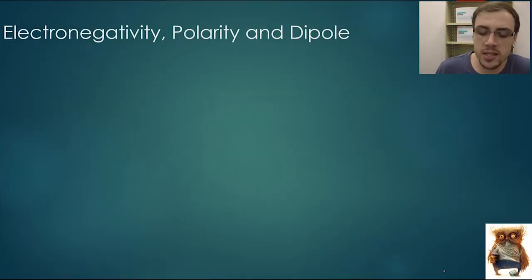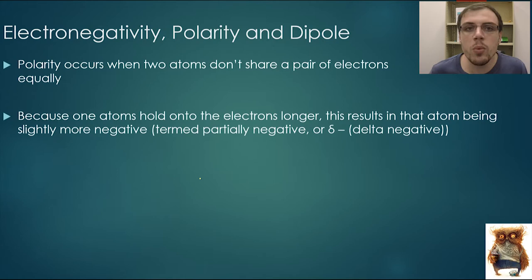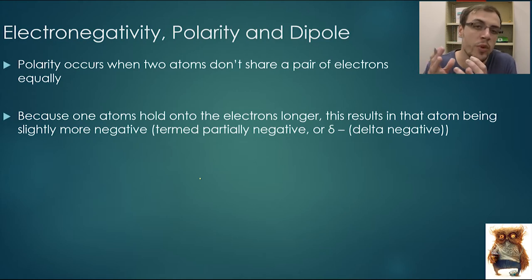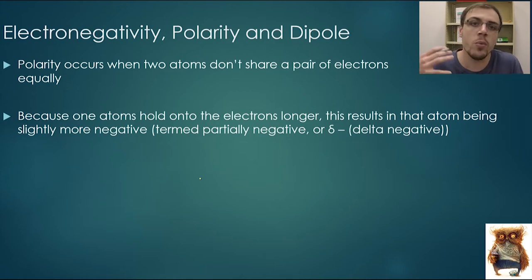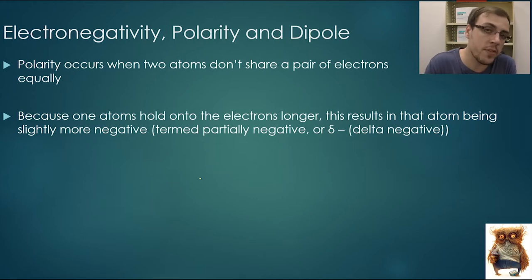Let us now move on to electronegativity, polarity, and dipole. This is something that students get very, very stressed with. Essentially, what happens is that when you've got an atom that is electronegative — that is an element that really, really wants electrons — it will try and steal those electrons from a different element, but it won't want to give them back.